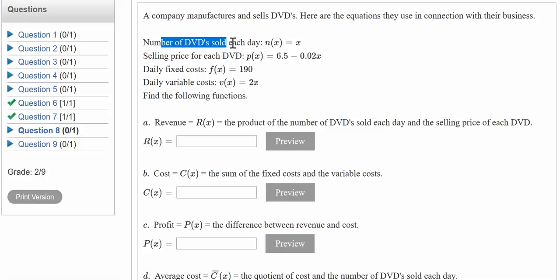A company manufactures and sells DVDs. Here are the equations to use in connection with the business questions. This will get you business majors prepped. The number of DVDs sold each day is called the n function, n(x), but it's just x. Our variable is the number of DVDs sold. The selling price for each DVD, p(x), is 6.5 minus 0.02x.